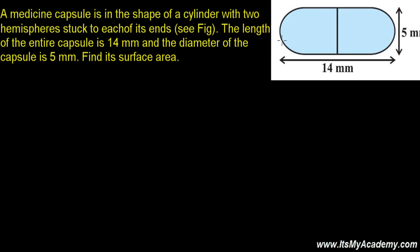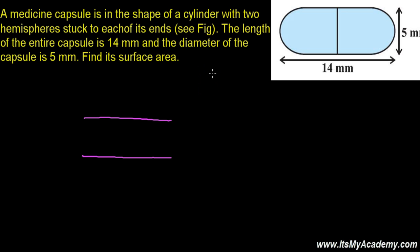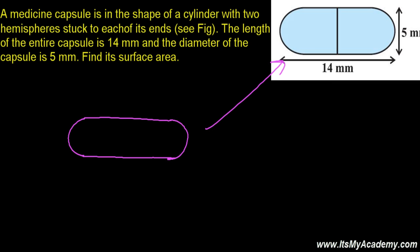Basically, we have a cylinder — a pipe-like structure — and we have a sphere that we cut into two parts. We put one hemisphere on one side and the other hemisphere on the other side, and we form a capsule just like shown here.